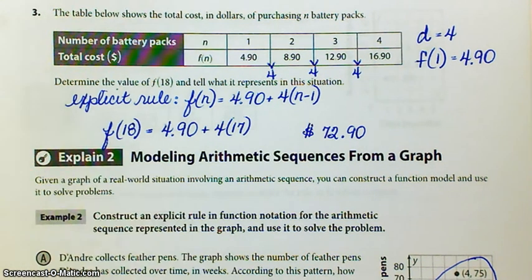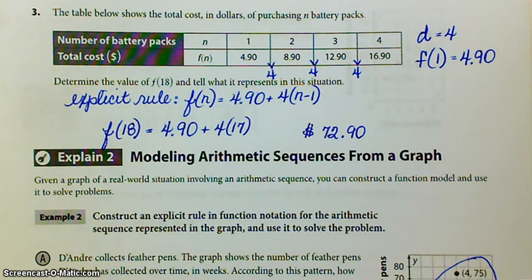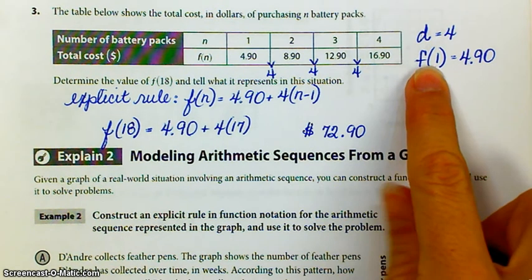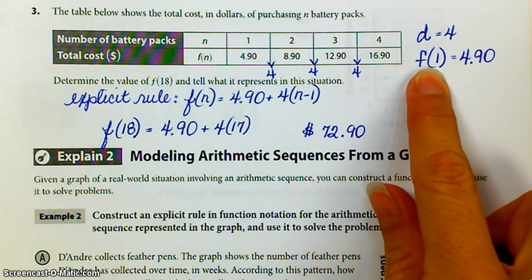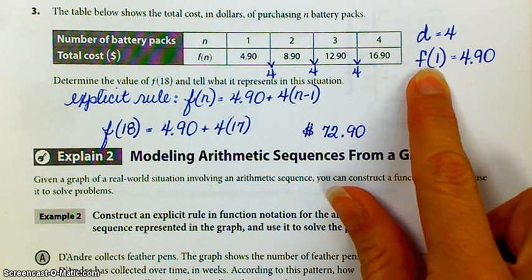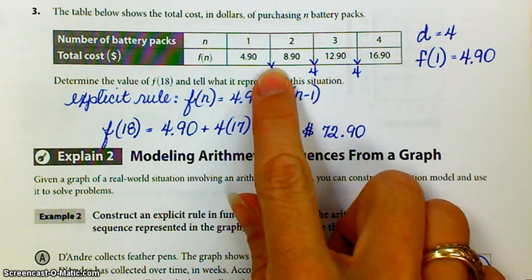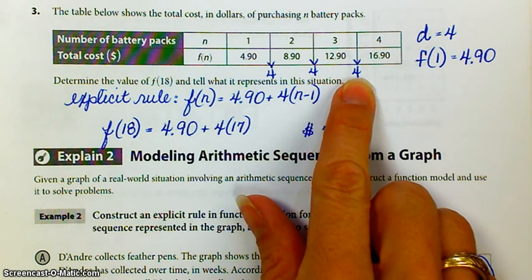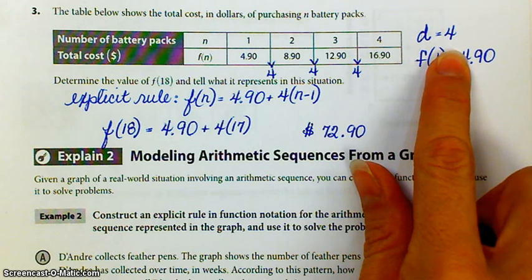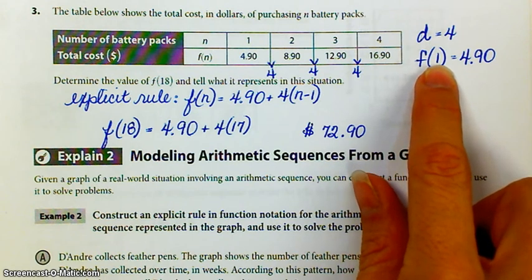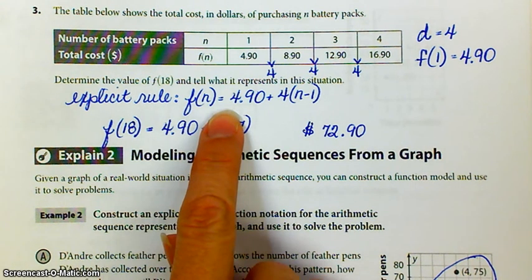And it says to determine the value of f of 18 and tell what it represents in this situation. Well, the first thing I'm going to do is notice that the value of f of 1 is 4.90. And I'm going to look at the table and notice that the common difference is 4. So I'm going to use those two items to write an explicit rule.